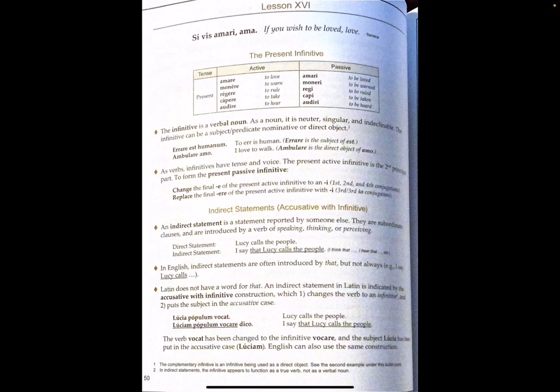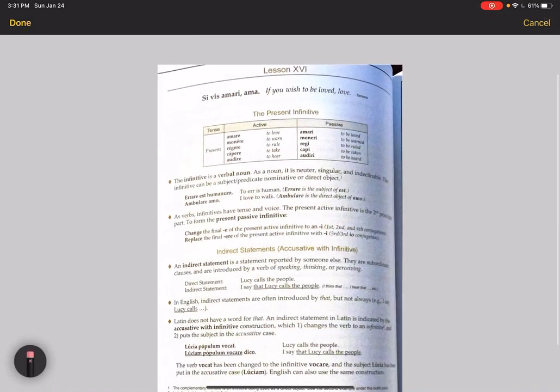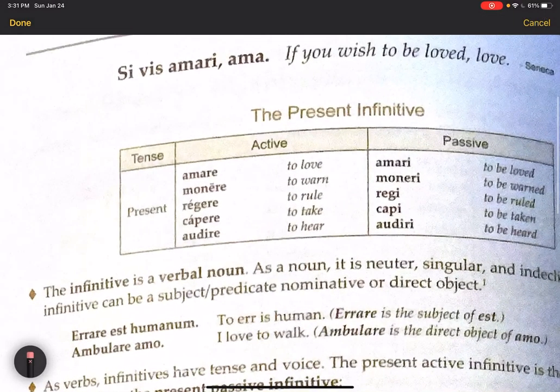We are talking about the present active and passive infinitives. We are already very familiar with the active infinitive — the present active infinitive. Remember, that is the second principal part of every verb. It's the present active infinitive, and it's the second principal part.